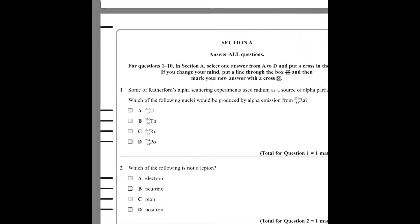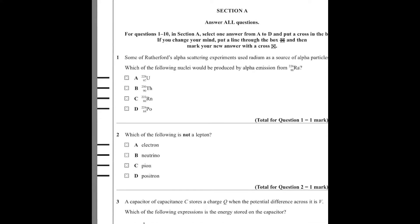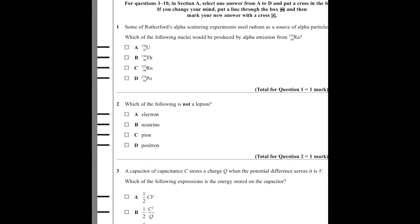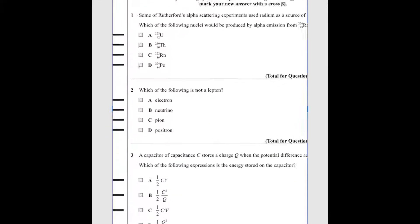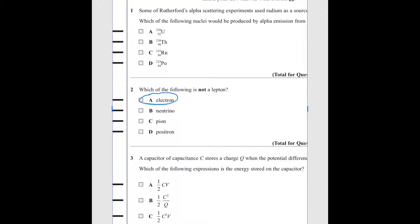Number 2: which of the following is not a lepton? A lepton is a fundamental particle. According to the physics book, there are six leptons: electron, electron neutrino, muon, muon neutrino, tau, and tau neutrino. Here the electron is a lepton, neutrino is also a lepton. The question remains is pion and positron. The positron is an antiparticle of an electron, so this is a type of electron, also a lepton. So the remaining particle is the pion. Pion is not a lepton.